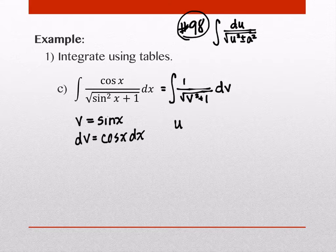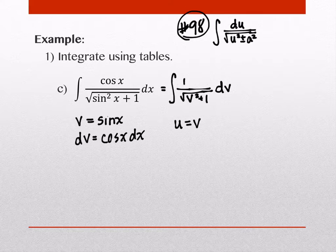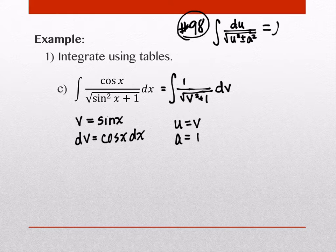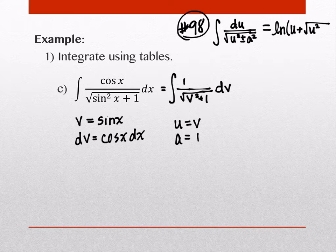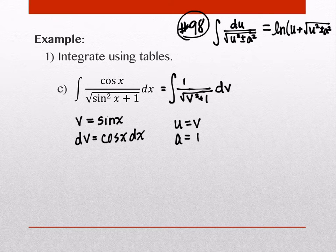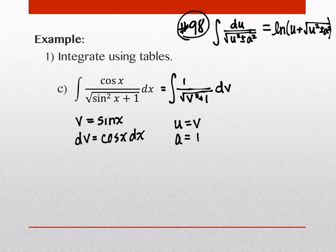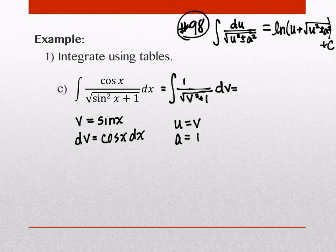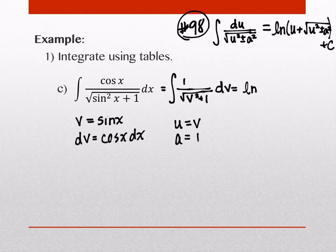So as we're looking at that, what is our u as we're identifying pieces? Yeah, it's going to be just v, and we'll do that replacement here in a second. Yeah, and then what would our a be? It would be 1. So the integral of this, according to number 98, says that this will be the natural log of u plus the square root of u squared, plus or minus the a squared, plus c.